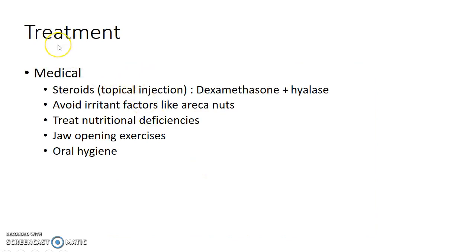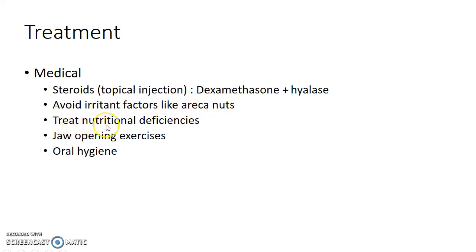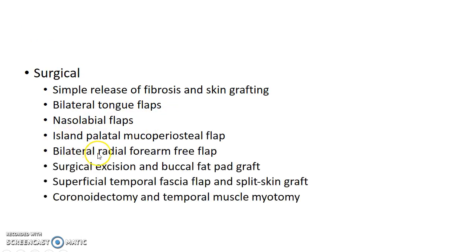How do you treat a case of oral submucous fibrosis? The medical treatment includes topical injection of steroids like dexamethasone. Hyaluronidase should also be injected for better treatment. The patient should be advised to avoid irritant factors like areca nuts, alcohol, etc. The underlying nutritional deficiencies like vitamin deficiency should be treated. Jaw opening exercises should be done and oral hygiene should be maintained.